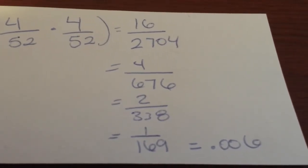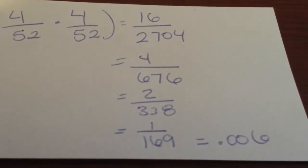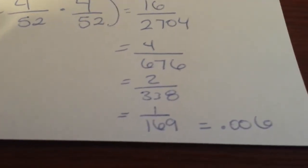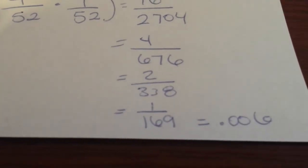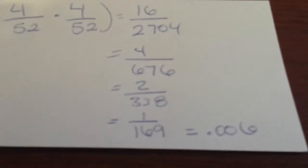We reduce that to 4 over 676, we reduce that once again which is 2 over 338, and we reduce it again which is 1 over 169 which will equal 0.0059.